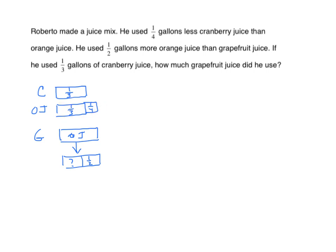Looking at the diagram, to find orange juice I need the sum of one-third and one-fourth. For that sum we find our common denominator — it's twelve. We have four-twelfths and three-twelfths, representing one-third and one-fourth respectively. I find the sum and get seven-twelfths. Now we have seven-twelfths for the orange juice.